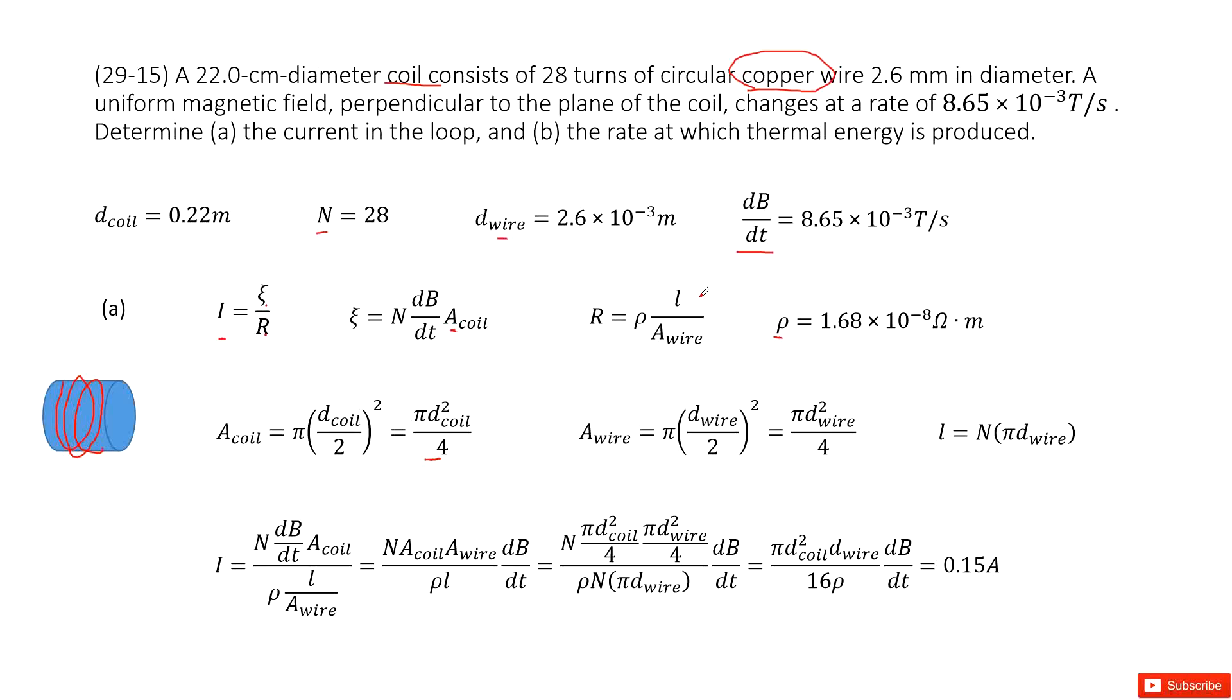And then we can see the cross-sectional area for the wire is pi R squared. So you can write the R as the diameter of the wire divided by 2. So we write it there.